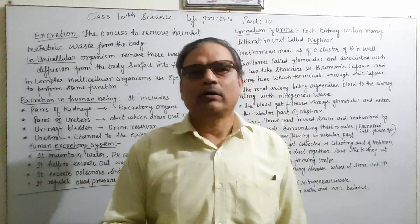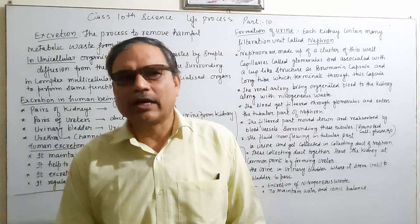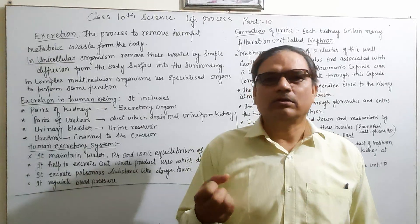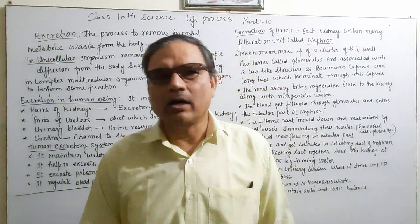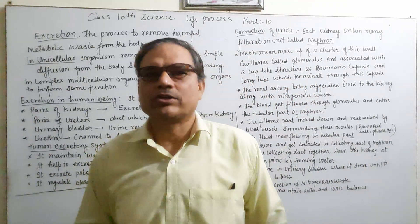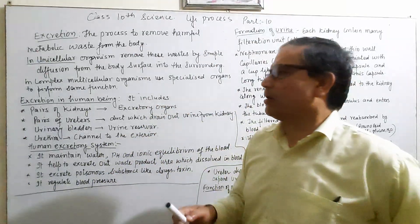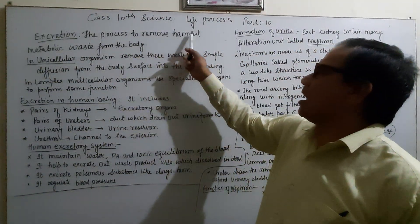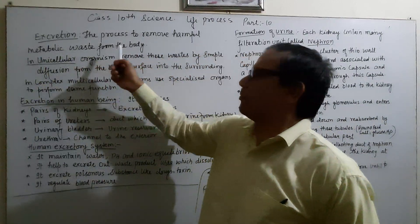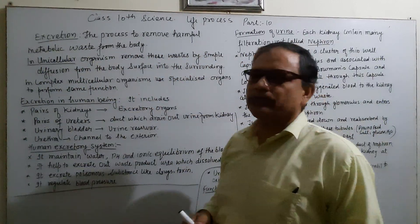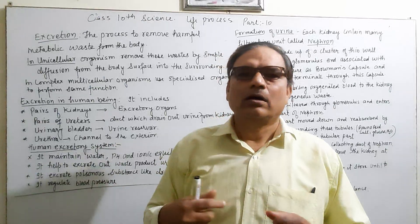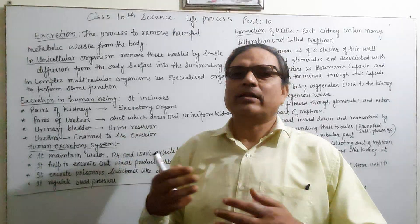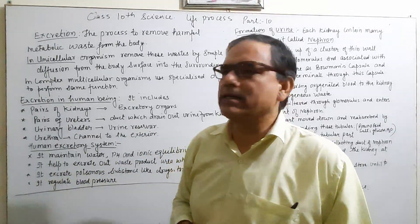The liquid waste excreted from our body is urine, or urea — which contains nitrogenous waste. This liquid form is not useful for our organs or body cells. The process to remove harmful metabolic waste from the body is known as excretion.